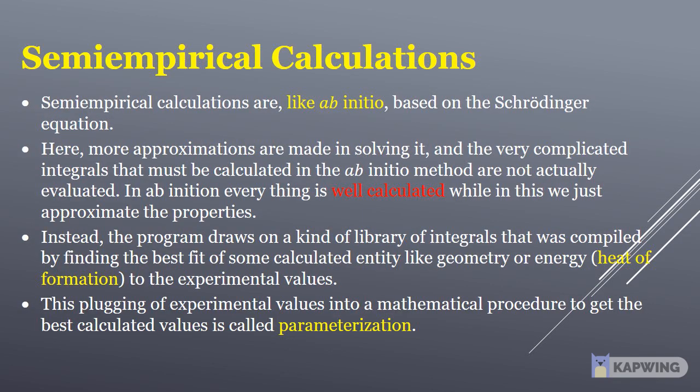Semi-empirical calculations are based on the Schrödinger equation. Here, more approximations are made in solving it, and the very complicated integrals that must be calculated in the Ab initio method are not actually evaluated. In ab initio everything is well calculated while in this we just approximate the properties.